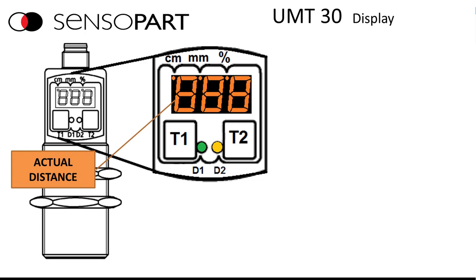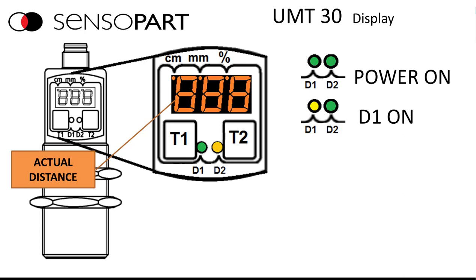Here's a close up of the display. This shows actual distance. There's two LEDs, one for D1, one for D2. Normally they're both green when you power up the sensor.